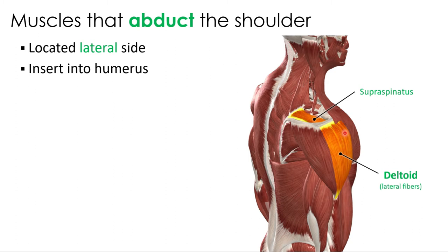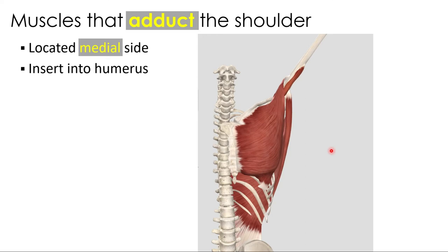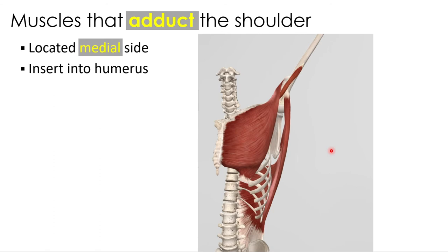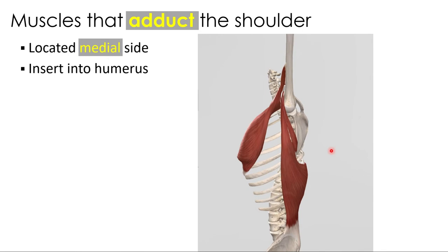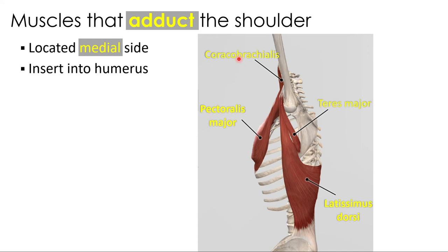Muscles that abduct the shoulder are on the lateral side and insert onto the humerus: the supraspinatus — the first rotator cuff muscle — and the lateral fibers of the deltoid. Muscles that adduct the shoulder are on the medial side, both posteriorly and anteriorly. Several large muscles assist: the pectoralis major, coracobrachialis, teres major, and latissimus dorsi. Notably, the pectoralis major and latissimus dorsi are antagonists for flexion/extension but synergists for shoulder adduction.